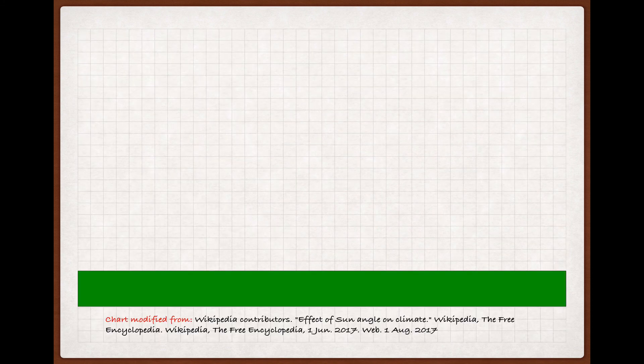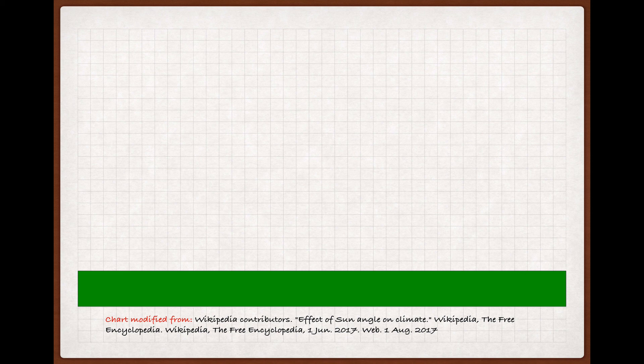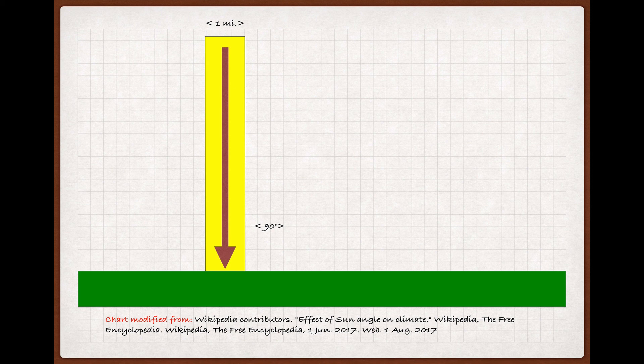Since we're imagining things, let's imagine a flat piece of ground, and then let's imagine a beam of sunlight about a mile wide, hitting it at a 90 degree angle, like it would close to the equator. Because it's coming straight down, perpendicular to the ground, it'll cover an area exactly equivalent to its width, a mile wide.